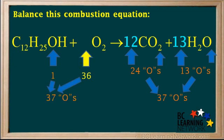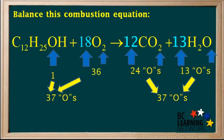For O2 to supply 36 oxygen atoms, it must have a coefficient of 18, because 2 times 18 equals 36. Now we have 37 oxygens on both sides of the equation, so oxygen is balanced.